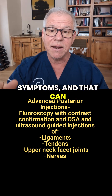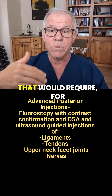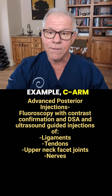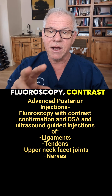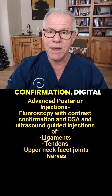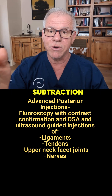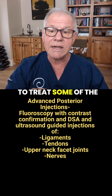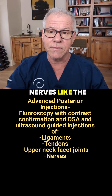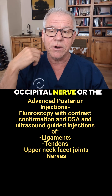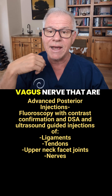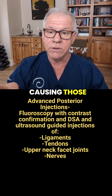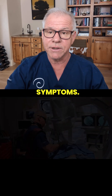That can be the upper neck facet joints, which would require, for example, CRM fluoroscopy, contrast confirmation, and digital subtraction angiography. Or it involves treating some of the nerves like the occipital nerve or the vagus nerve that are causing those symptoms.